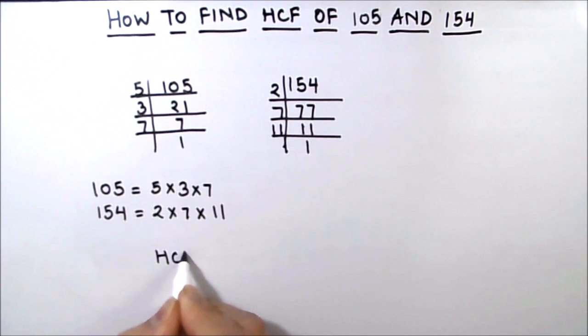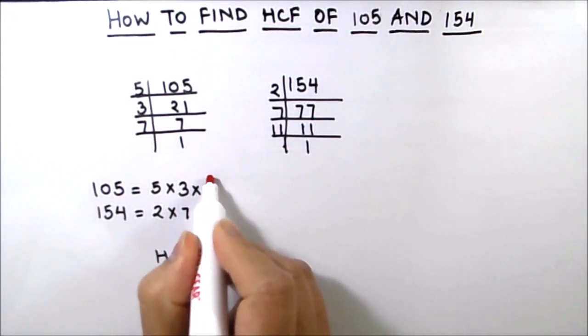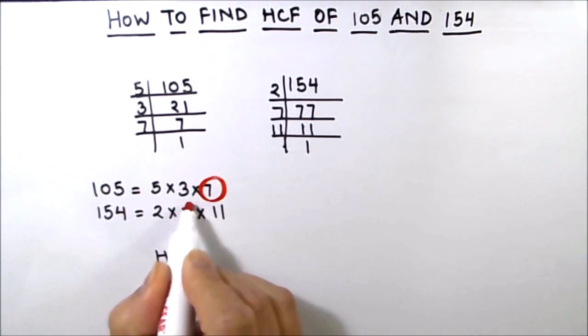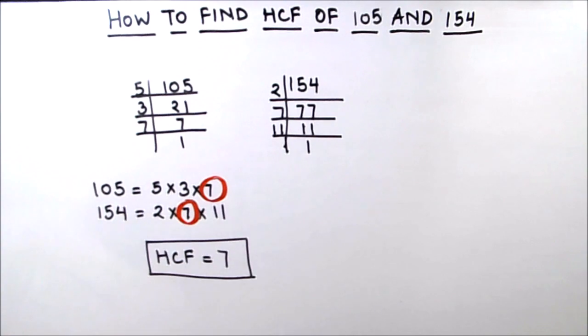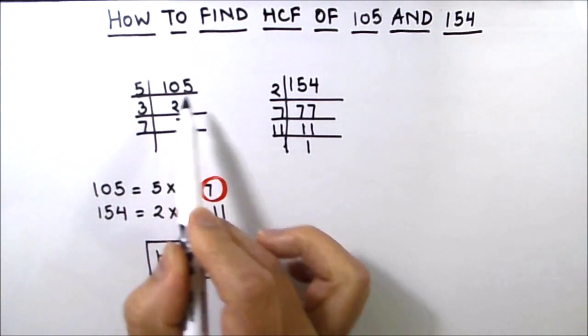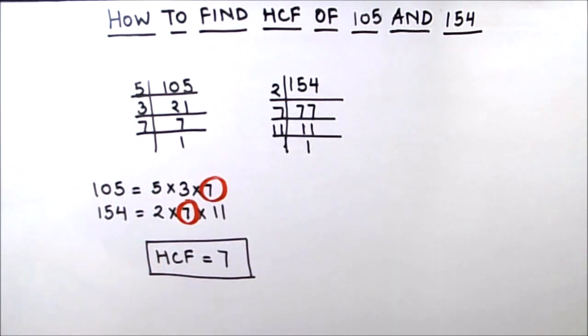Now we have to find the highest common factor, and the highest common factor is the number which is common in both the numbers. So here we see that 7 is the only common factor between the two numbers. 7 is the HCF of these two numbers. That means 7 is the number which divides both the numbers fully without leaving a remainder.